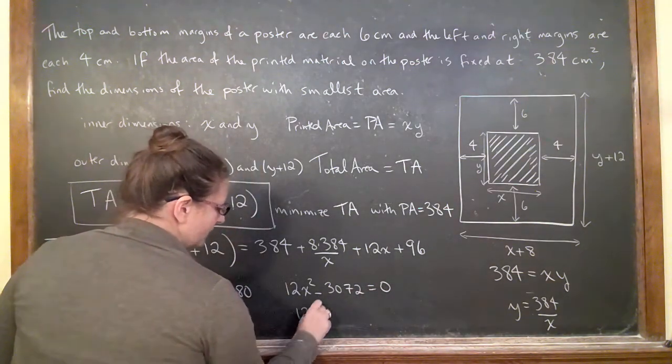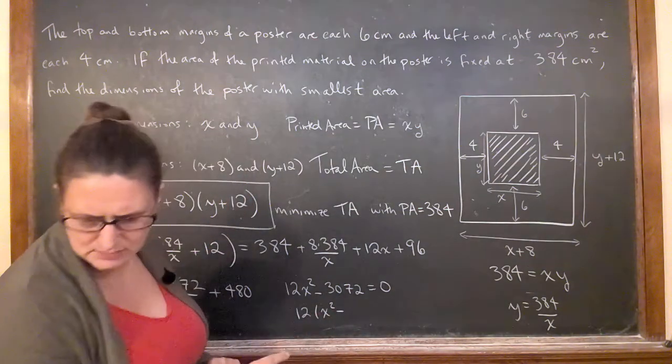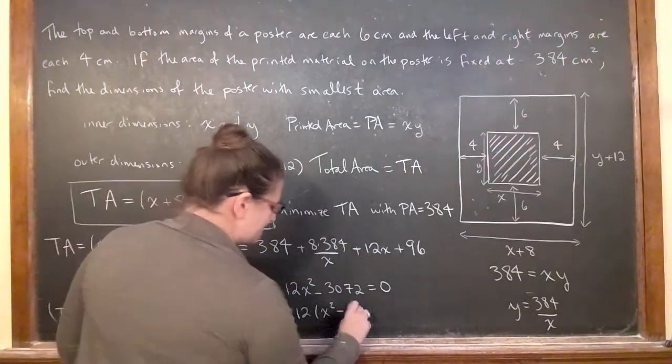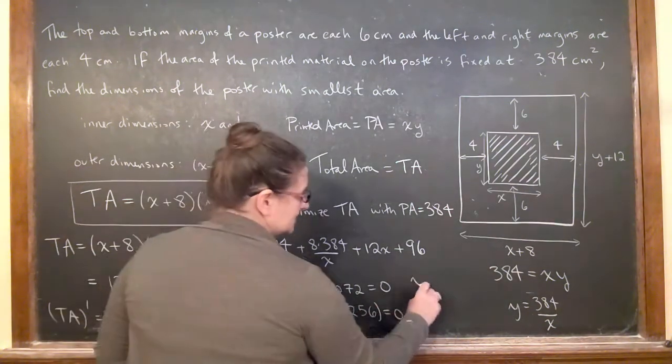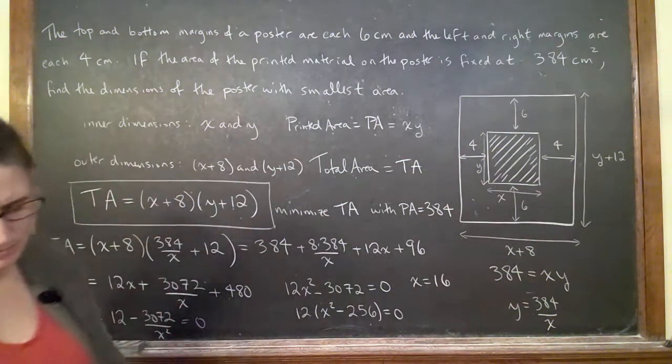Which is going to give me, if I pull out the x squared, this is 256. So x is 16.